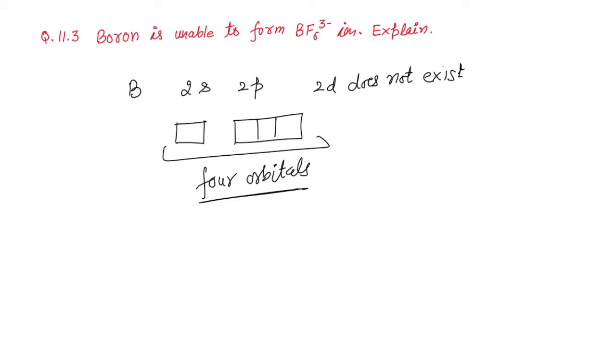So due to the absence of d orbital in second period elements, all the second period elements including boron, there is absence of d orbital. So due to the absence of d orbital, boron can accommodate maximum of 8 electrons.